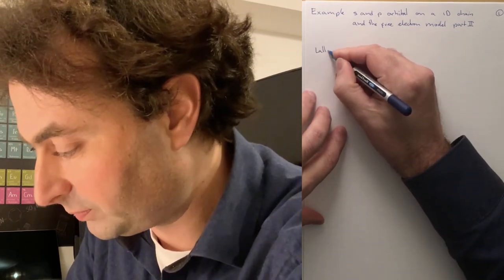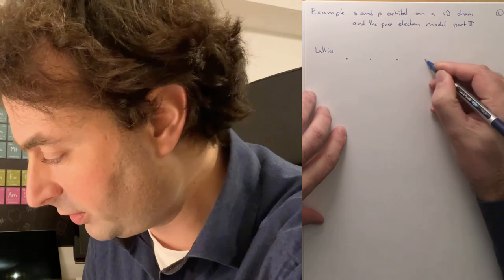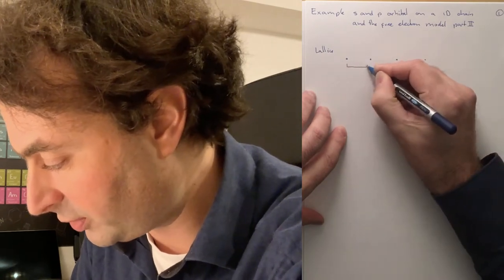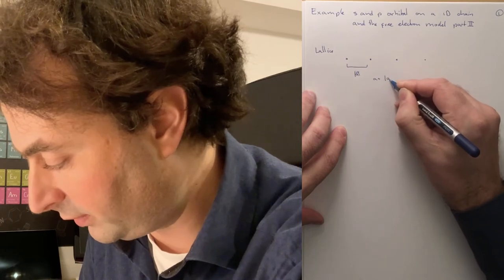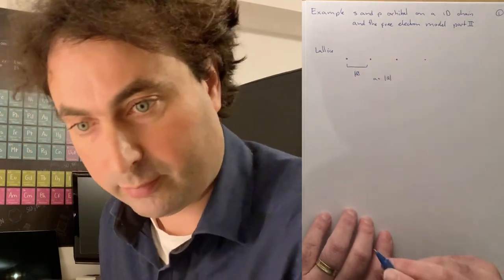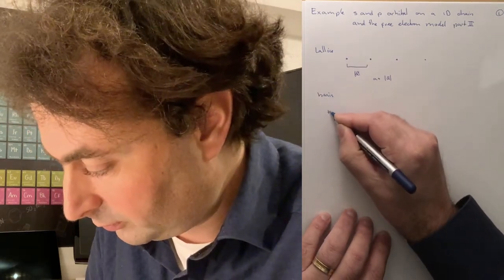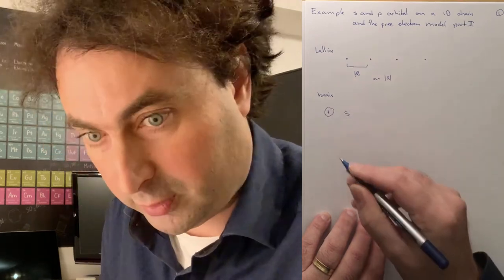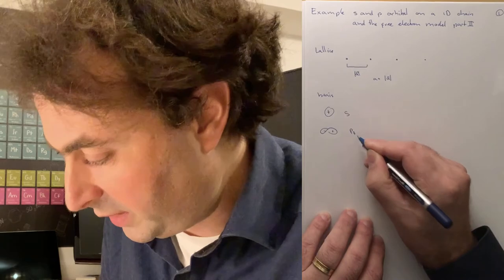We make a lattice in one dimension with lattice constant a, such that the length of the vector a is a. We have a basis where we have an s orbital and a pz orbital.